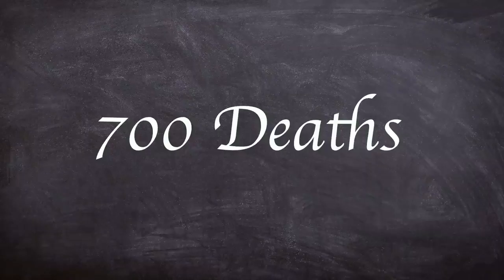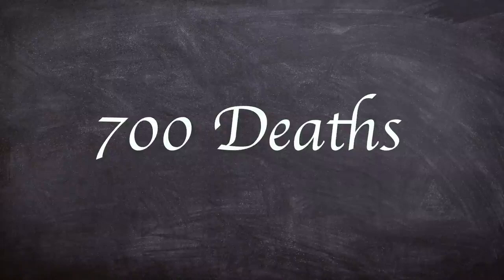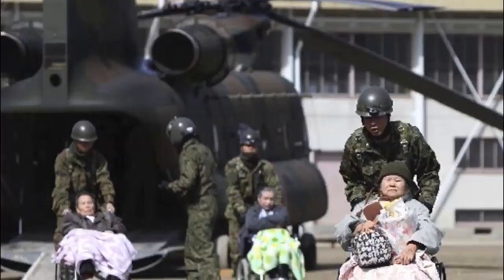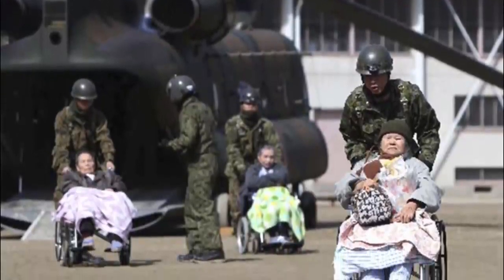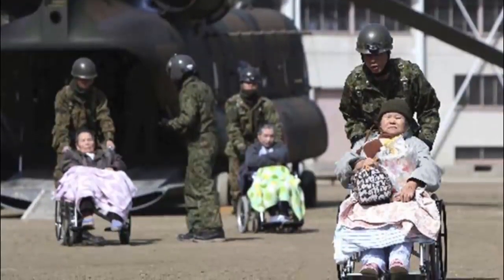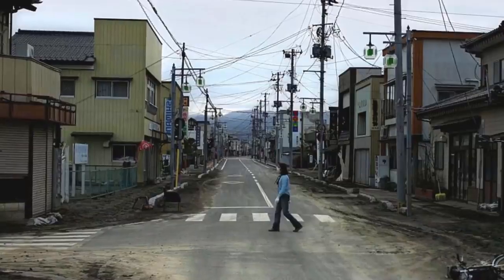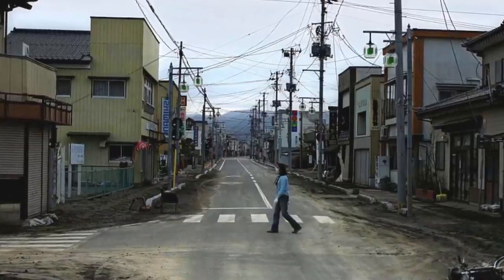It was estimated that there were around 700 deaths from disaster-related incidents, for example people uprooted from homes and hospitals because of evacuation. Another big contributor to health risks from such an incident is the psychological trauma linked to being near a nuclear disaster.